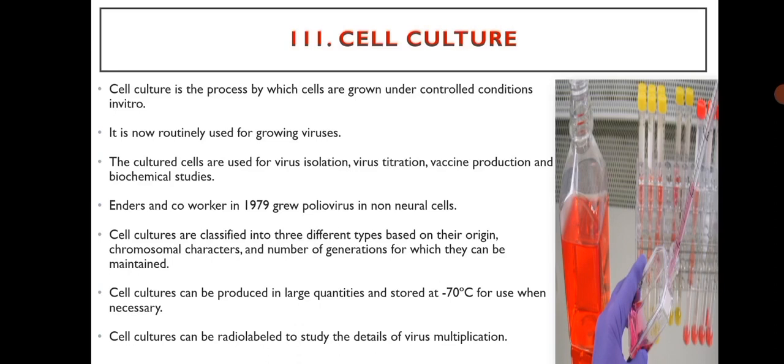Cell culture is a process by which cells are grown under controlled conditions in vitro, and it is now routinely used for growing viruses. The cultured cells are used for virus isolation, virus titration, vaccine production and biochemical studies. Enders and co-workers in 1949 grew poliovirus in non-neural cells. Cell cultures are classified into three different types based on their origin, chromosomal characters, and the number of generations for which they can be maintained. Cell cultures can be produced in large quantities and stored at minus 70 degrees Celsius for use when necessary, and can be radiolabelled to study the details of virus multiplication.